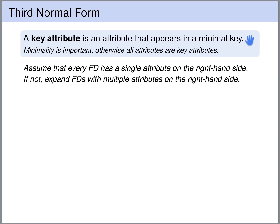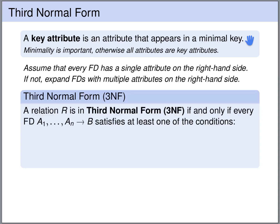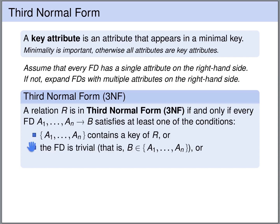For the definition of the third normal form, we assume that we have made all of the right-hand sides of functional dependencies singular. So if a functional dependency has more than one attribute on the right, then we split this into multiple functional dependencies. A relation R is said to be in third normal form if, for every functional dependency with a single attribute on the right, one of the following conditions is satisfied. The first two conditions are just the same as for the Boyce-Codd normal form.